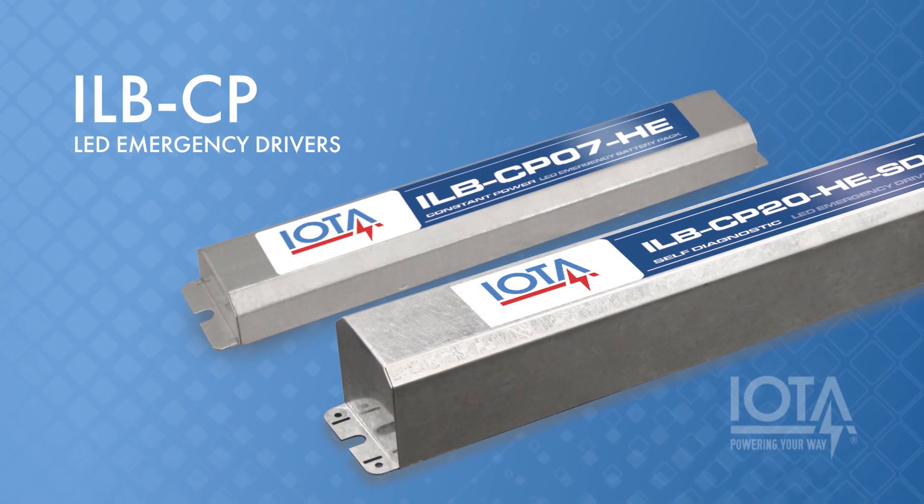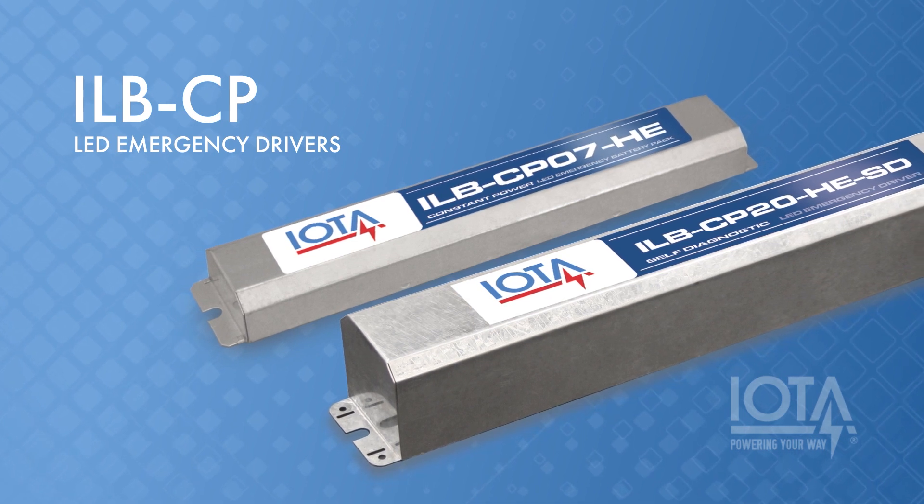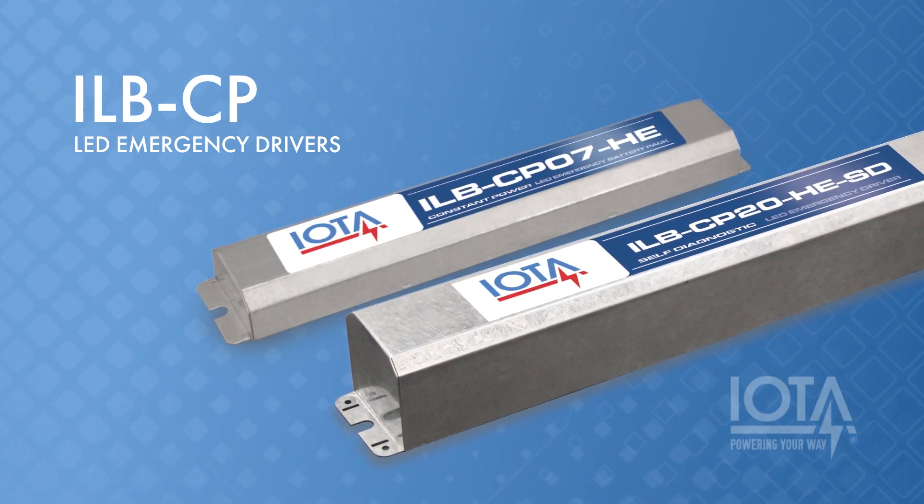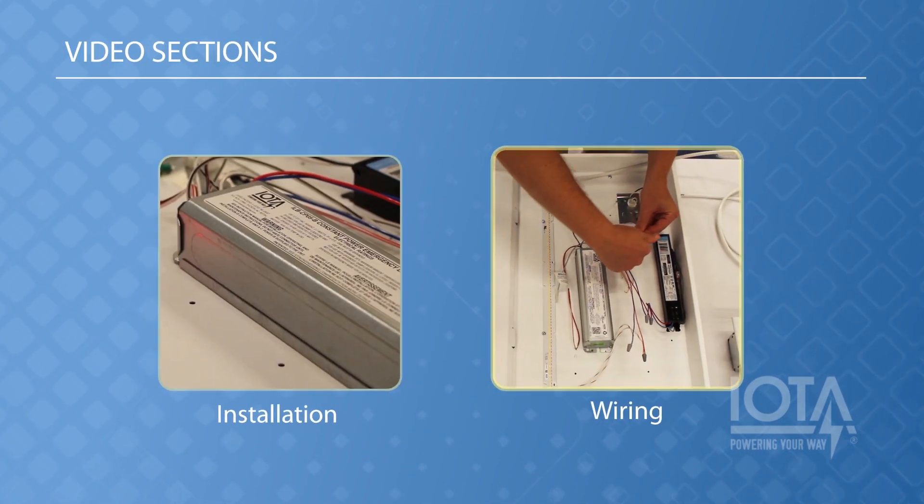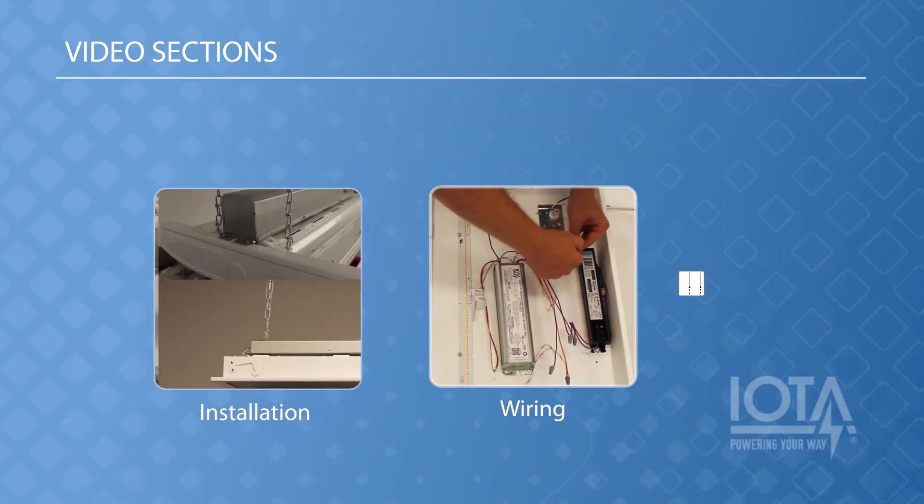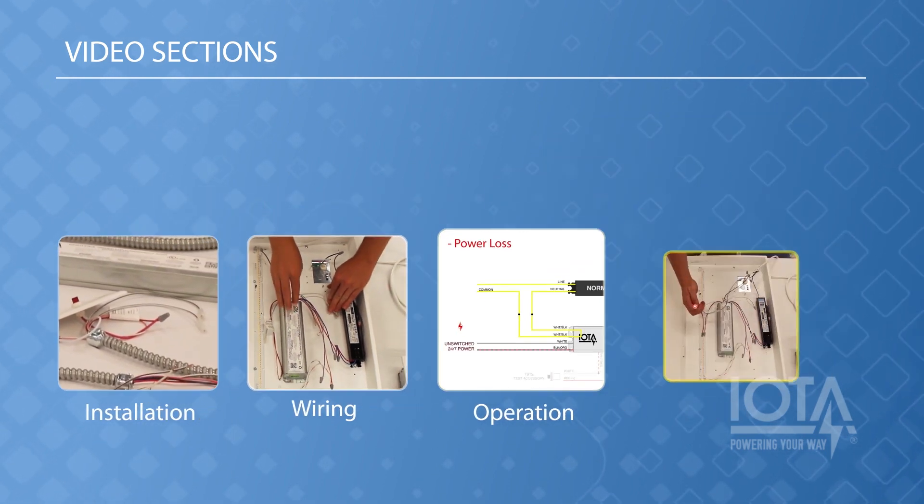IOTA ILB-CP LED emergency drivers are powerful unit equipment solutions for safe and reliable emergency egress lighting compliance. This video will step through the installation and wiring of an ILB-CP LED emergency driver, along with a discussion of its operation under various power conditions and its proper testing and maintenance.